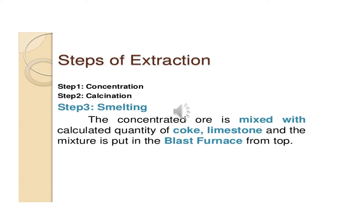Step 3 is smelting. Step 1 is concentration, step 2 is calcination, and now we proceed to step 3, smelting. In smelting, the concentrated ore is mixed with a calculated quantity of coke and limestone, that is calcium carbonate. This mixture is put into the blast furnace from the top. In the blast furnace, there are 5 important reactions that take place. The calcined ore, that is Fe2O3, plus coke and limestone, is mixed together and placed from the top into the blast furnace.